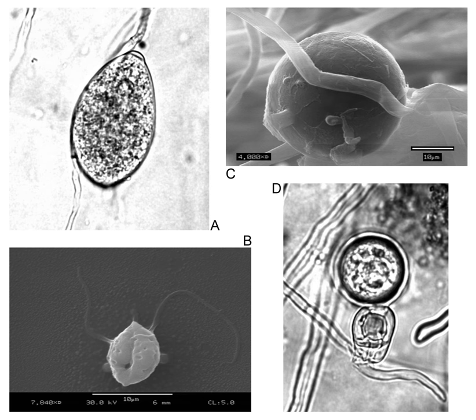Most oomycetes produce two distinct types of spores. The main dispersive spores are asexual, biflagellate spores called zoospores, which are capable of chemotaxis — movement toward or away from a chemical signal — such as those released by potential food sources, in surface water including precipitation on plant surfaces. A few oomycetes produce aerial asexual spores distributed by wind. They also produce sexual spores called oospores, which are translucent, double-walled, spherical structures used to survive adverse environmental conditions.